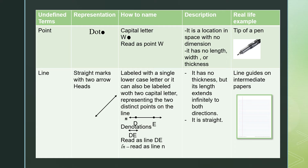The first undefined term is a point. To represent a point, we use a dot. You will just draw a dot to represent a point. To name a point, you use a capital letter. Like here, we have the representation which is a dot and the capital letter W.